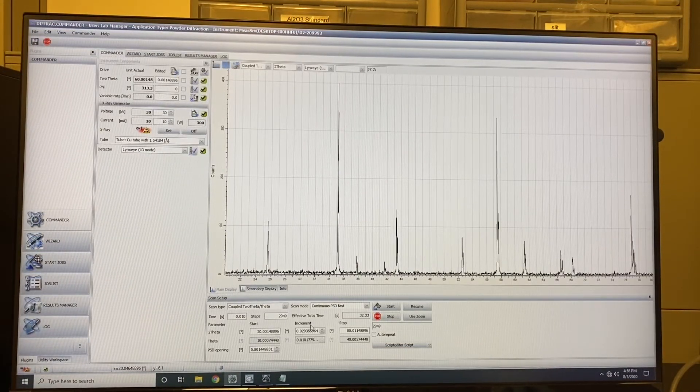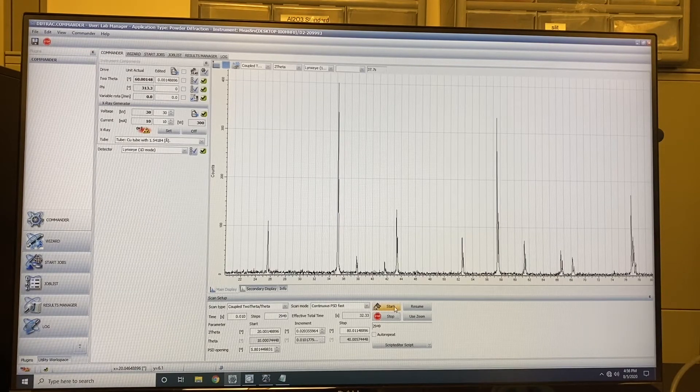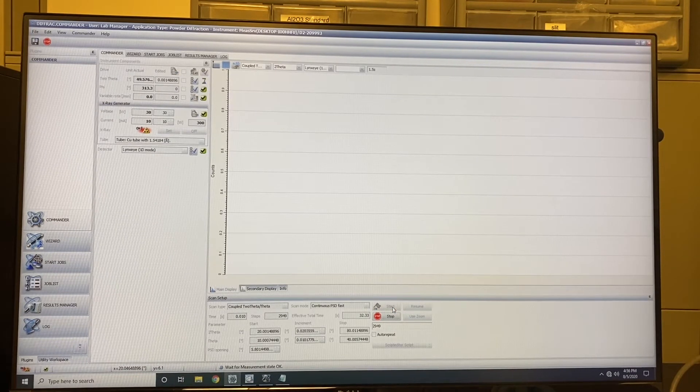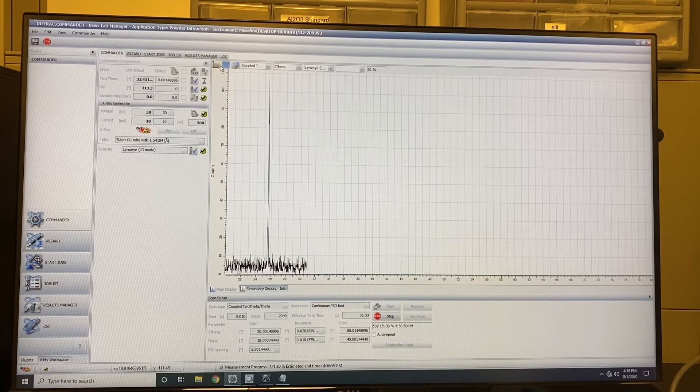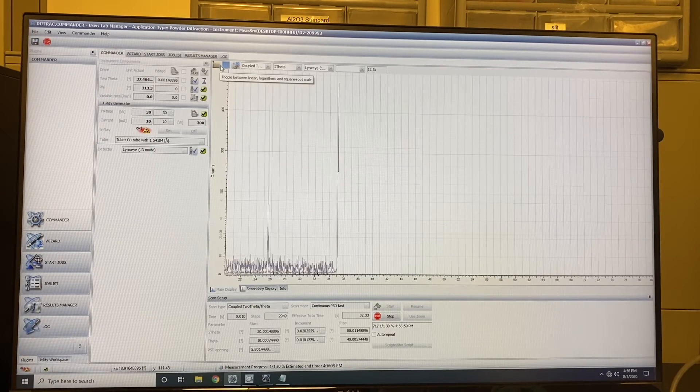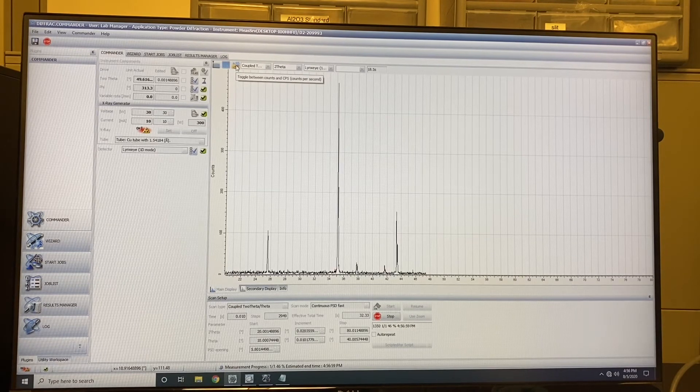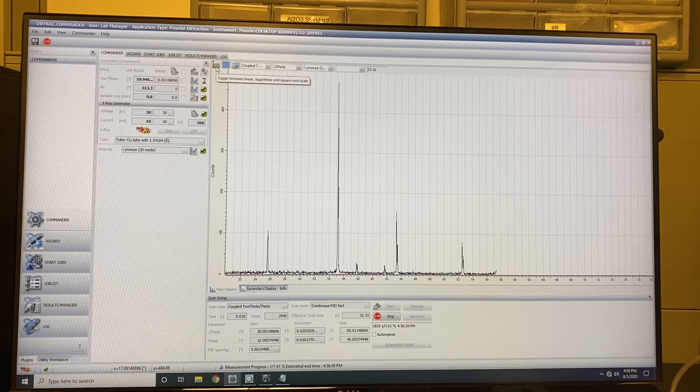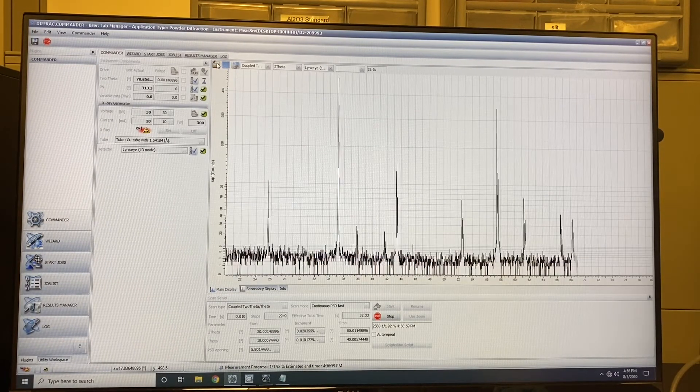After the parameter setup, you can start your measurement. Here we have one icon, Start. You just click. Here the y-axis is counts. And if you want to see the CPS, you can change here, toggle between counts and CPS. But usually we will use counts here. And if the peak is not obvious, you can also change it to a log, square or linear.